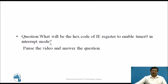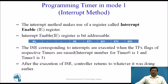Question: What will be the hex code of the IE register to enable timer 0 in interrupt mode? To enable the interrupt, the EA bit must be 1. The don't care bits are assumed 0. Since we are using timer 0, ET1 is 0, and ET0 must be 1 because we are enabling timer 0 for interrupt. EX0 is also 0. So the bit pattern becomes: 1, 0, 0, 0, 0, 0, 1, 0, which gives the hex value 82H.